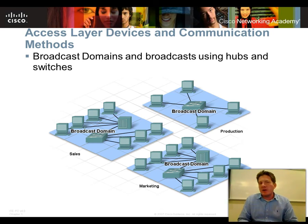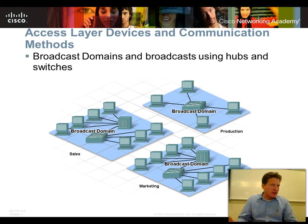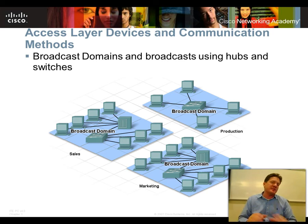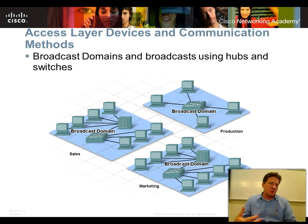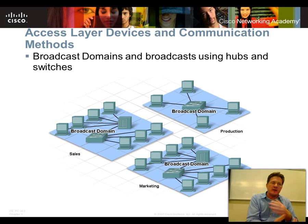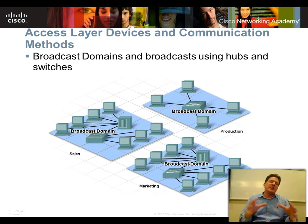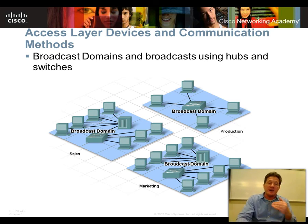A broadcast domain is the set of all machines able to receive a broadcast. In your home network, every machine on the same switch can see broadcasts, but the router prevents those broadcasts from going out to the internet — only the machines in your home network can see them. This is referred to as a broadcast domain.